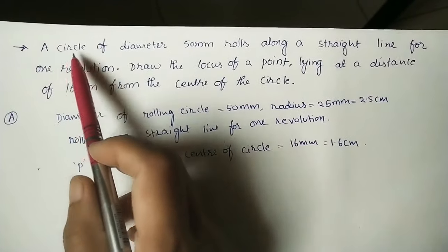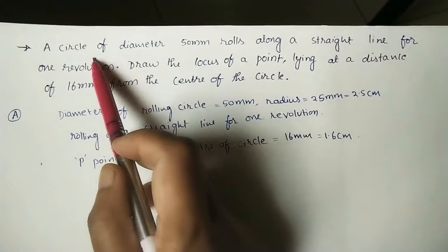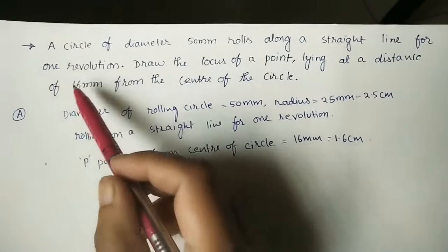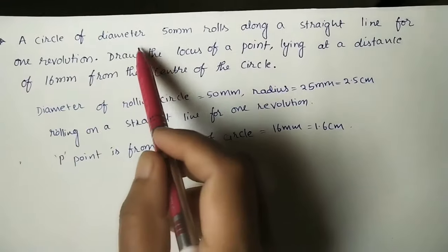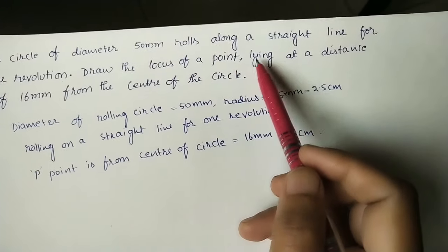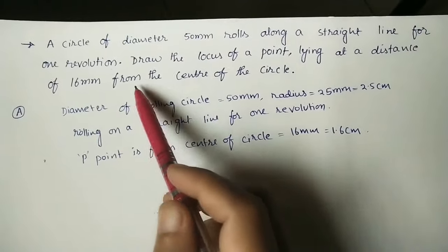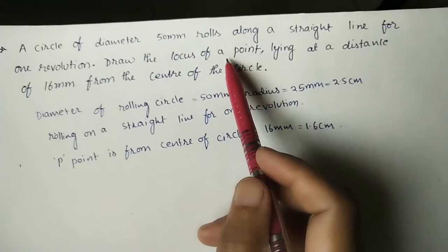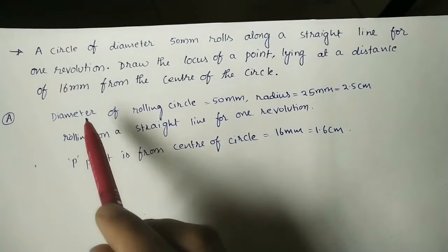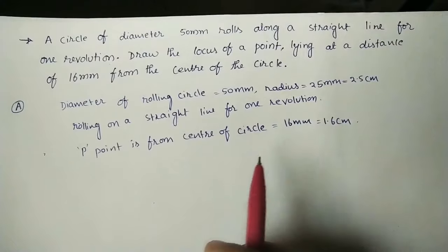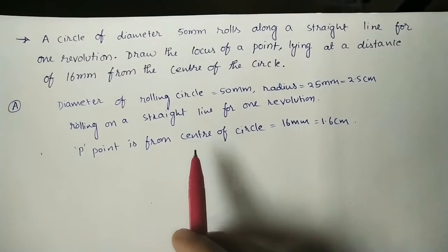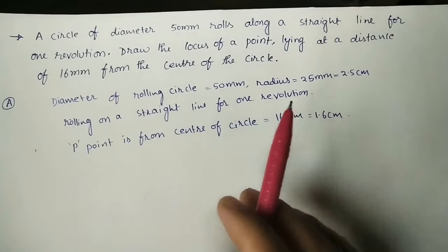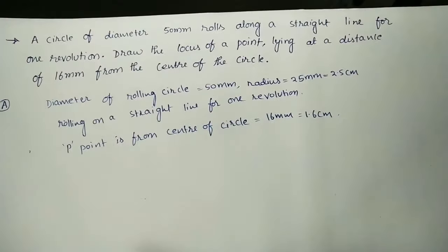Let us do this diagram using the given question. A circle of diameter 50 mm rolls along a straight line for one complete revolution. Draw the locus of a point lying at a distance of 16 mm from the center of the circle. In the exam and drawing practice, you don't need to write the given data — just do the drawing. I have written the given data here only for understanding the question.